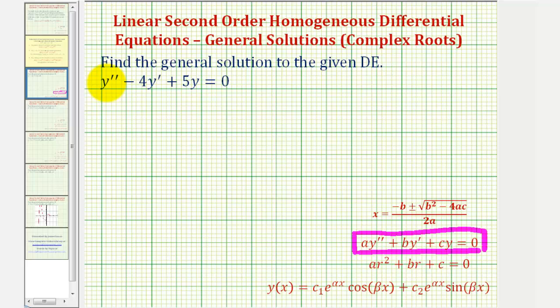Let's begin by noticing that a is equal to 1, b is equal to negative 4, and c is equal to 5. And therefore, the characteristic equation would be r squared minus 4r plus 5 equals 0.